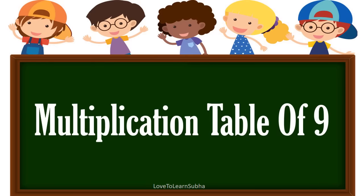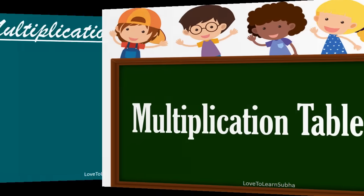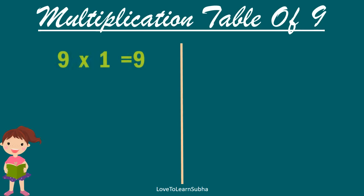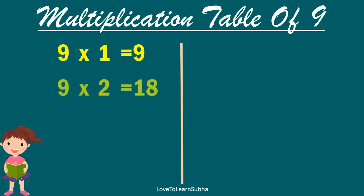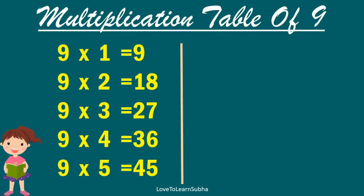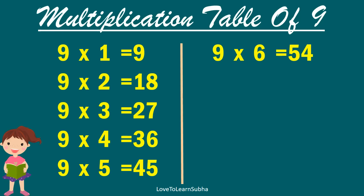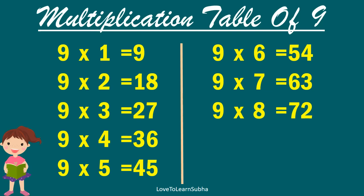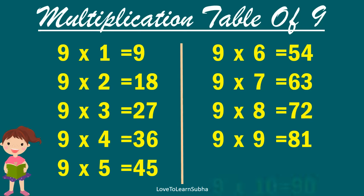Multiplication table of 9. 9 one is 9, 9 two is 18, 9 three is 27, 9 four is 36, 9 five is 45, 9 six is 54, 9 seven is 63, 9 eight is 72, 9 nine is 81, 9 ten is 90.